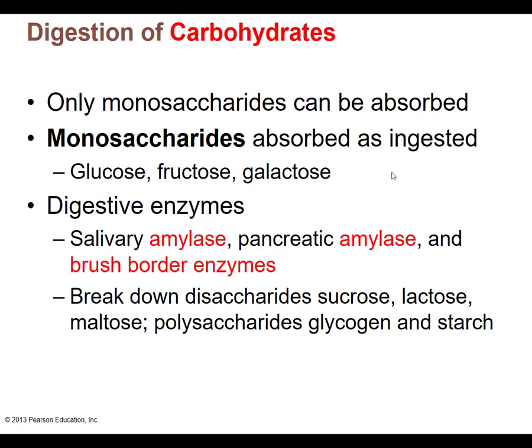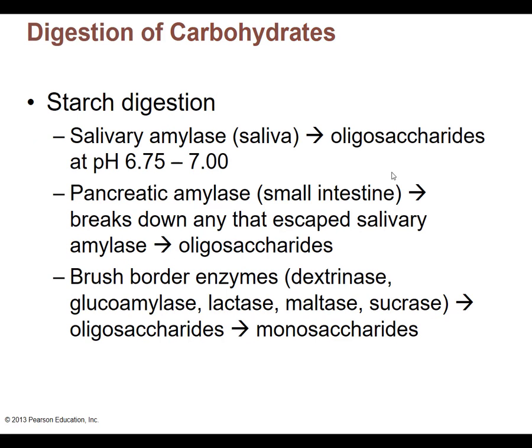The carbohydrate we can't break down because it's so complex is cellulose — that's fiber. Our bacteria try, but our enzymes cannot break down that complex carbohydrate. Starch digestion starts in the mouth with salivary amylase, breaking starch into oligosaccharides — multiple sugar units, not as big or complex as starch, but slowly starting to break it down. Salivary amylase works at about a neutral pH, which matches our saliva. Pancreatic amylase, released into the duodenum, breaks down any starches that escaped salivary amylase, also producing oligosaccharides.